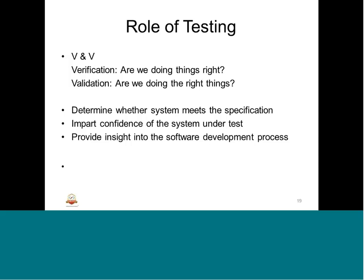The role of testing has two primary aspects: verification and validation, typically called V&V in the industry. Verification is 'are we doing things correctly?' and validation is 'are we doing the correct thing?' So verification means are we doing things right, and validation means are we doing the right things. Secondary roles of testing include determining whether the system meets its specification — that is, whether the intended behavior of the system is being realized within the embedded system.